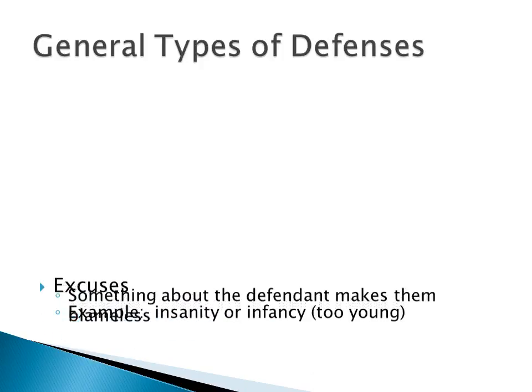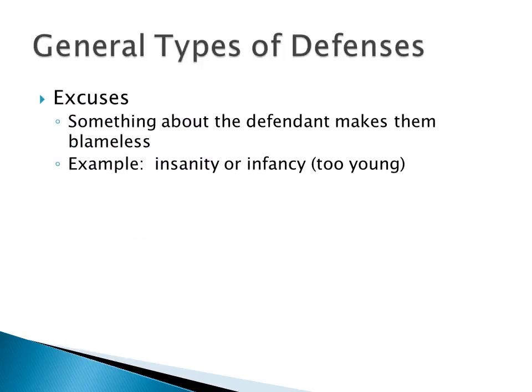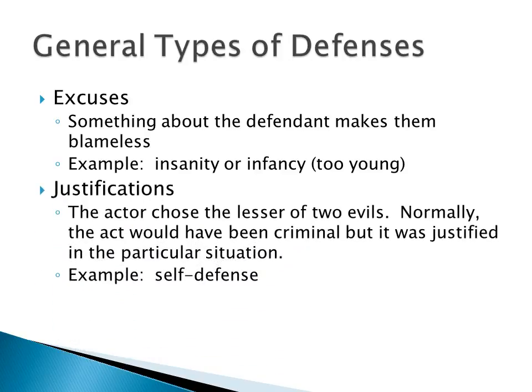There are various general types of defenses. Two major categories typically seen in criminal law are excuses and justifications. With an excuse defense, we focus on the defendant and say that there is something about the defendant that makes them blameless. The most common example of an excuse defense would be insanity. Because the person is insane and has little control over what they're doing because of their mental illness, we do not want to hold them responsible for their actions.